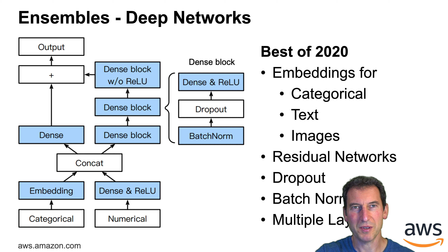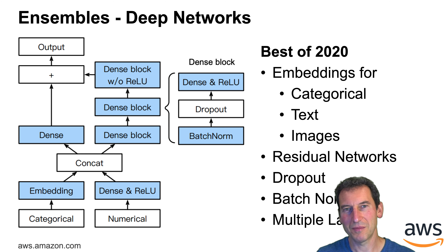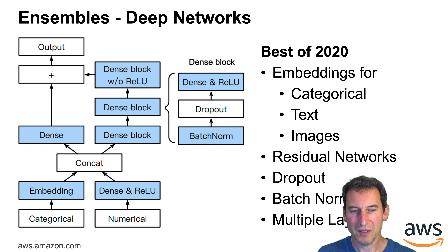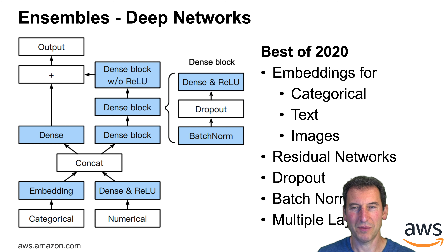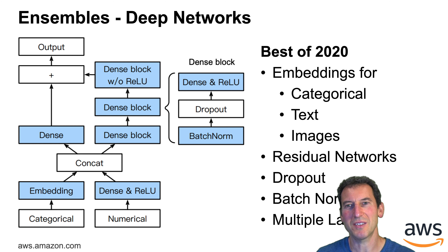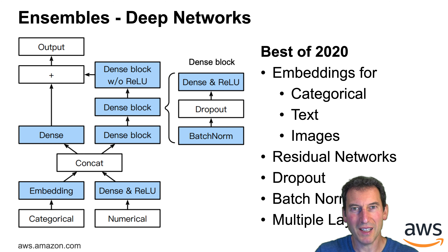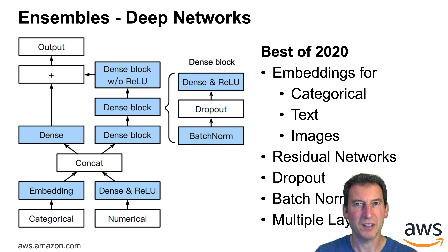Of course, we also need a deep network, and we take the best ideas from how one nowadays designs deep nets. You have separate embeddings for categorical, text, and image data. You have resnets, dropout, batch norm, and multiple layers — basically the standard repertoire of what you would use for deep learning.